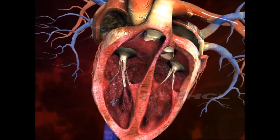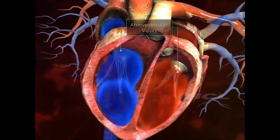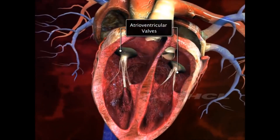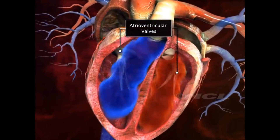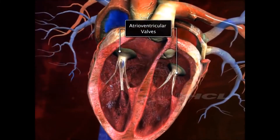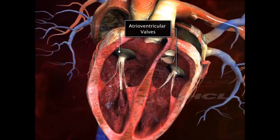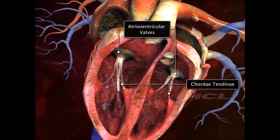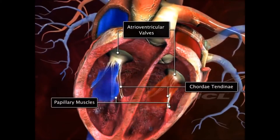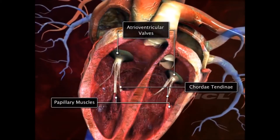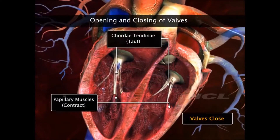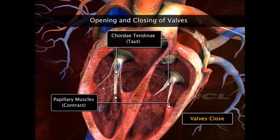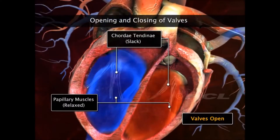The leaflets of these atrioventricular valves are connected to fibrous tissue called the chordae tendinae, which in turn are attached to papillary muscles. Contraction and relaxation of these muscles make the valves open and close.